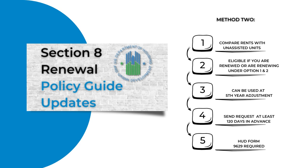If you're currently under an option one or two, this method can be used at the fifth year adjustment. When you submit your request, please make sure that it is submitted no later than 120 days before the contract or amend rent expiration.